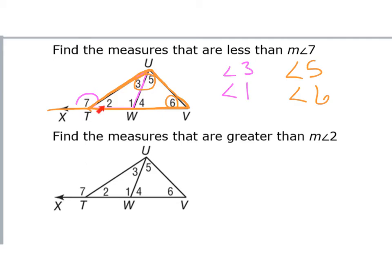Now, it looks like angle two is definitely smaller than seven — but remember, this picture doesn't say anywhere that it's to scale. Since I don't know if this is to scale, I can't say for sure. Even though two sure does look smaller than seven, I can't prove that this angle is really acute and this one really is obtuse. For the next one, find the measures of angles greater than angle two. I need to think of angle two as a remote interior angle, which means I need to extend this direction, making angle four the exterior angle. So the only angle I can prove is greater than angle two is angle four. Just because seven looks bigger doesn't mean I can prove angle seven is bigger than angle two.